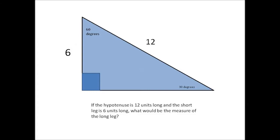If the hypotenuse is 12 units long and the short leg is 6 units long, what would be the measure of the long leg? According to the 30-60-90 triangle formula, the long leg is the short leg multiplied by root 3. Since the short leg is 6, the long leg would be 6 root 3.